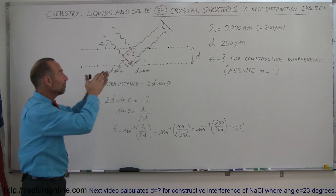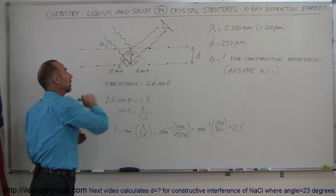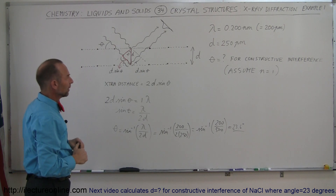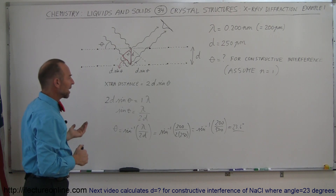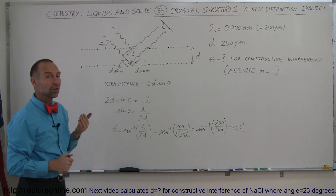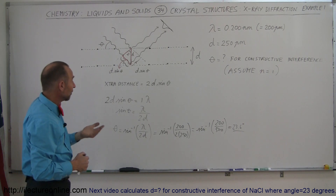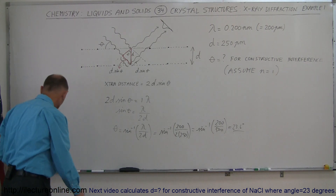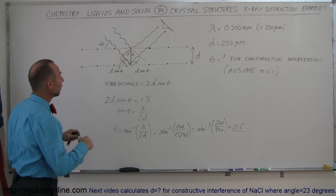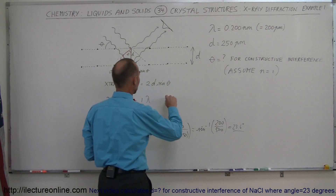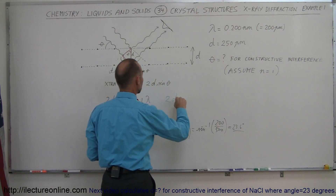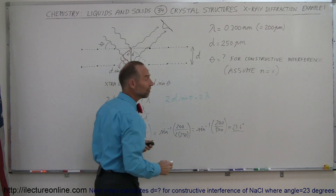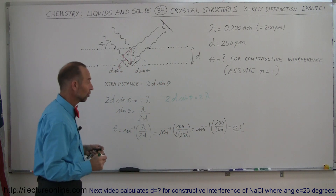So if we angle the beam such that it strikes the crystalline structure at 23.6 degrees relative to the horizontal, we'll get constructive interference and the detector will see both beams in phase. From that we can surmise what the separation distance is. Notice we could also increase the angle to find constructive interference when the path difference is two lambda. Let's try that — we'll set 2D sine theta equal to two lambda.